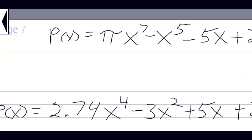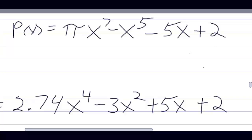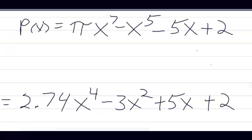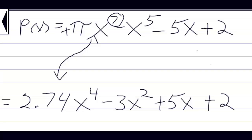Now let's look at p(x) = πx⁷ - x⁵ - 5x + 2. The highest power is x to the seventh, which is odd, and the leading coefficient is positive pi. So this is going to have the same end behavior as y = x³ — down on the left and up on the right — with the middle erased because it'll be doing other things in the middle.